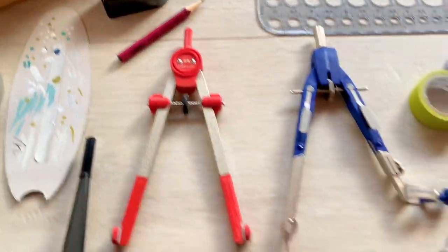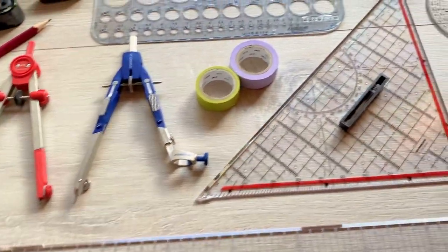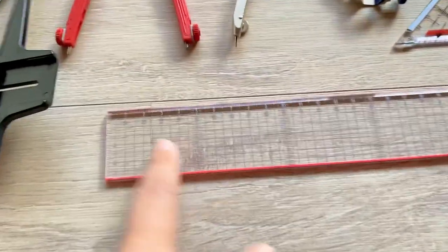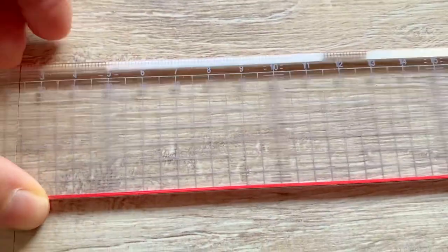Then depending on what you're doing you might need some of those, you know a ruler, a long ruler. And this one has lines which helps you navigate because you can align them.